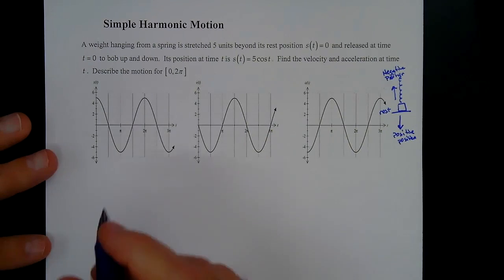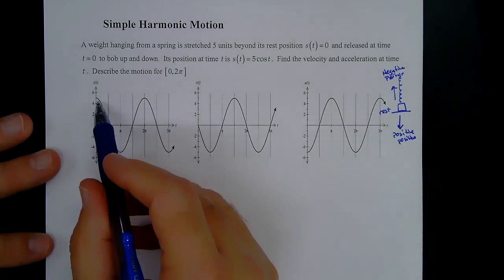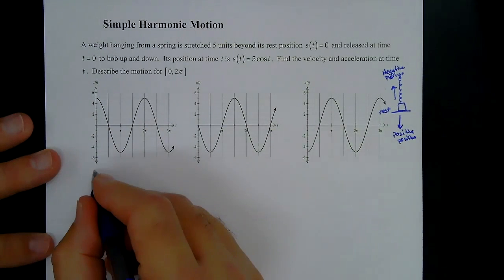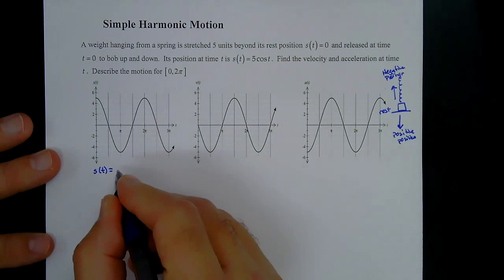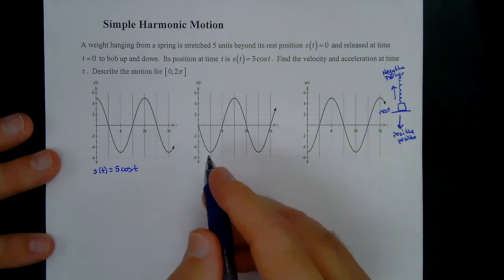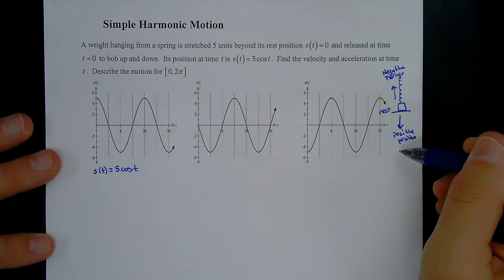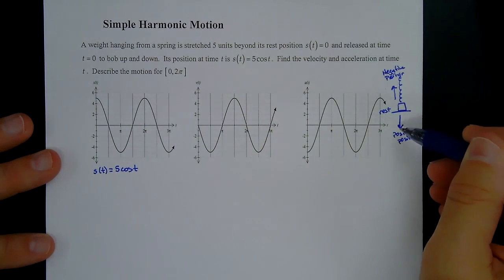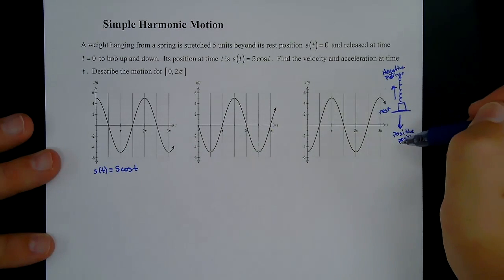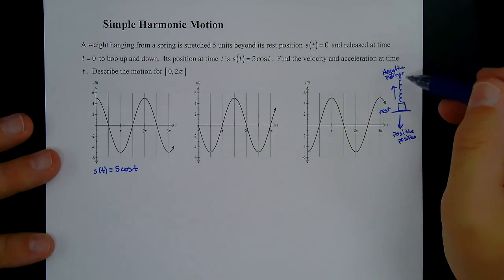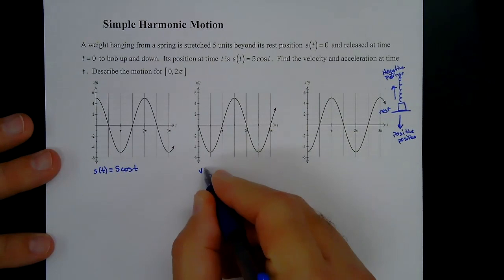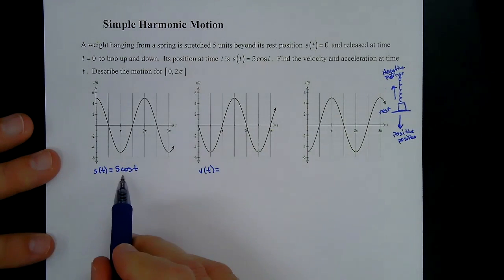We want to describe the motion from 0 to 2π. The position is s(t) = 5cos(t). After we pull it down and release it, it's going up at first — that's why the velocity is negative initially, because going up is the negative direction given how we've defined the orientation. So v(t) equals the derivative of position.